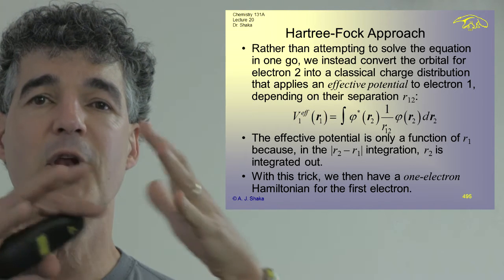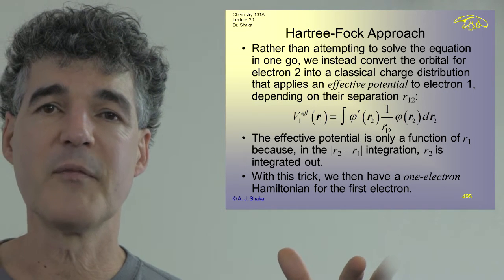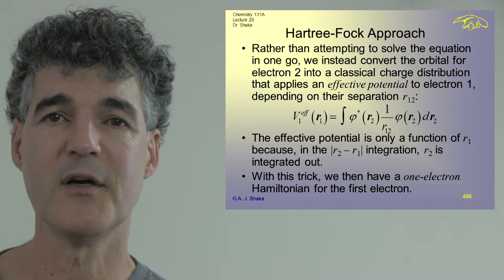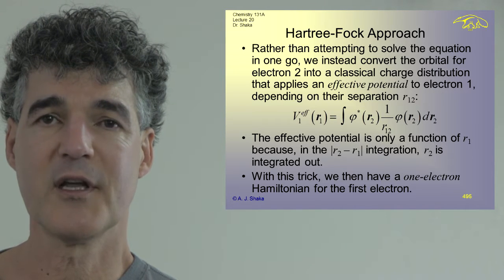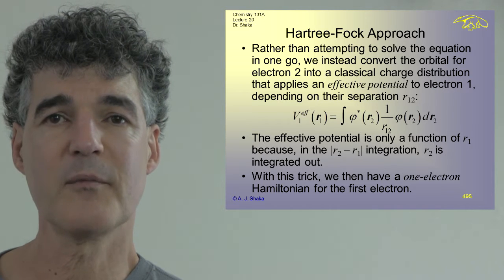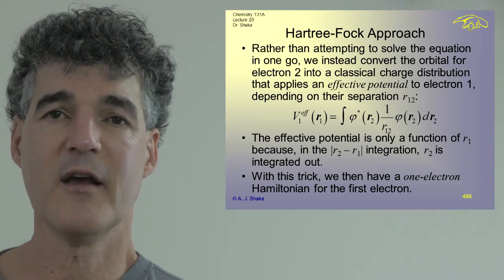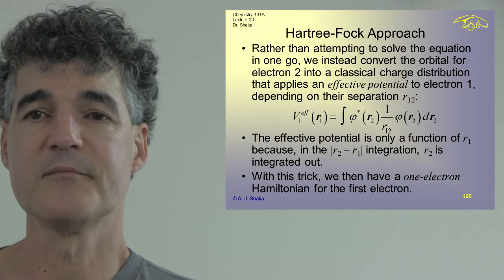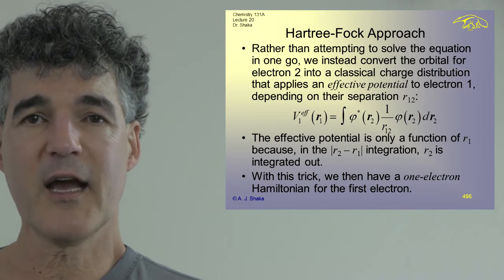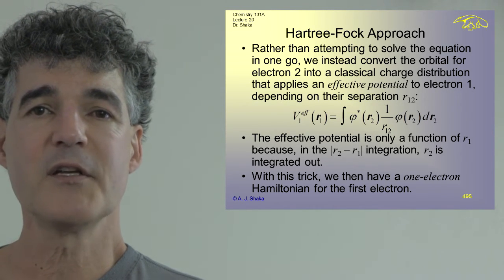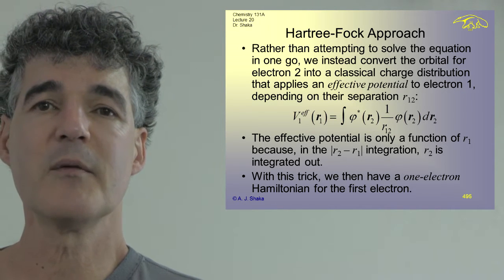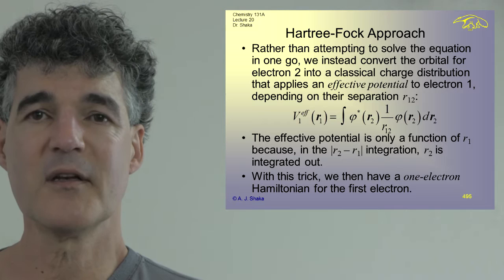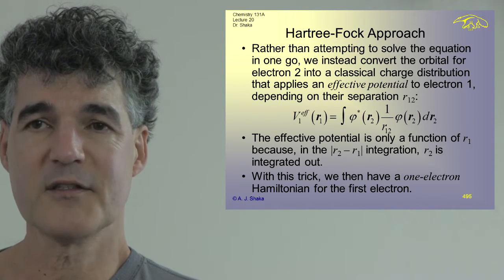You can imagine the second electron as some blur that gets less dense as you go farther from the atom. If the first electron is on the fringe of the blur, it doesn't have much repulsive potential energy pushing it away. If it's at a position where the blur has heavy density, it feels a lot of repulsion and may tend to avoid that region. With this trick of integrating out the second electron, we get a one-dimensional problem just like the hydrogen atom or the particle in a box.